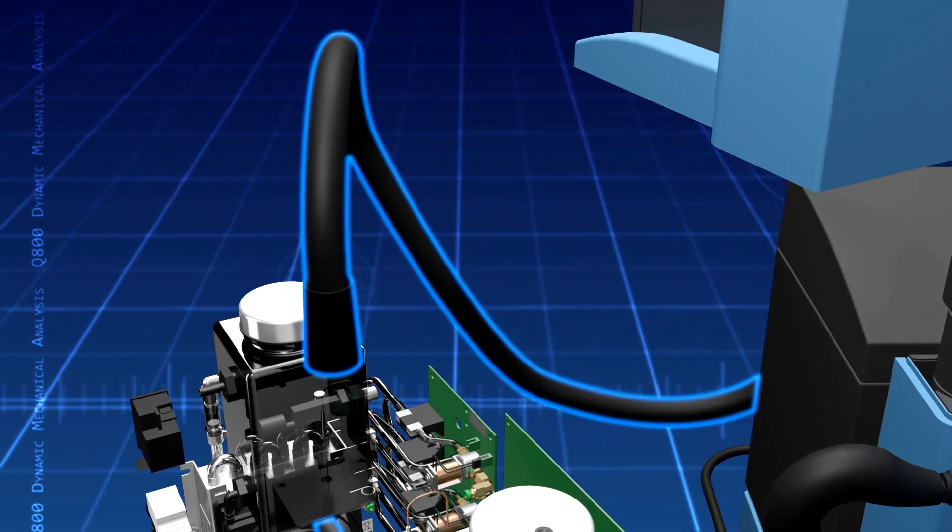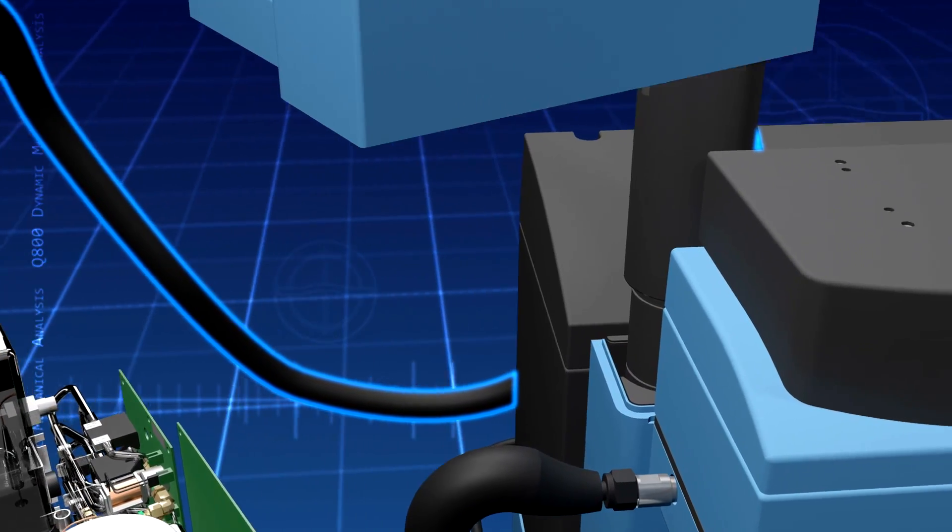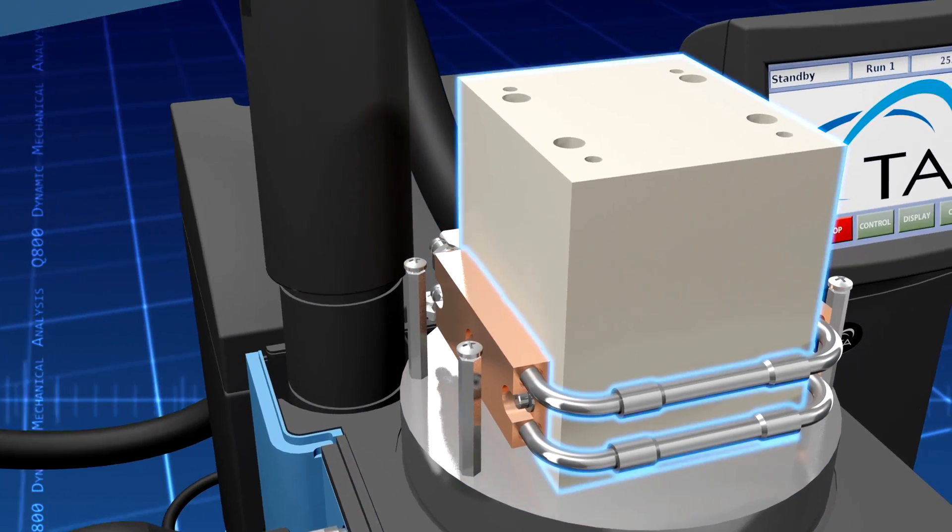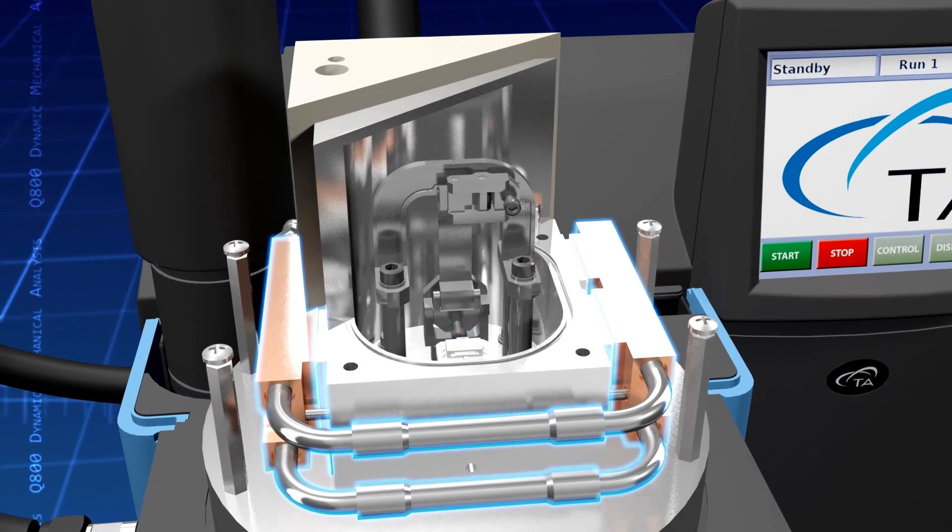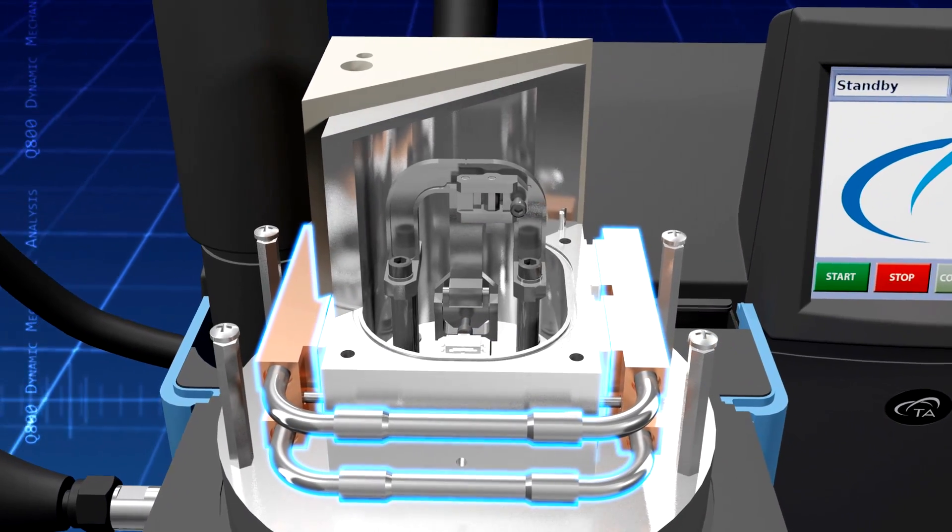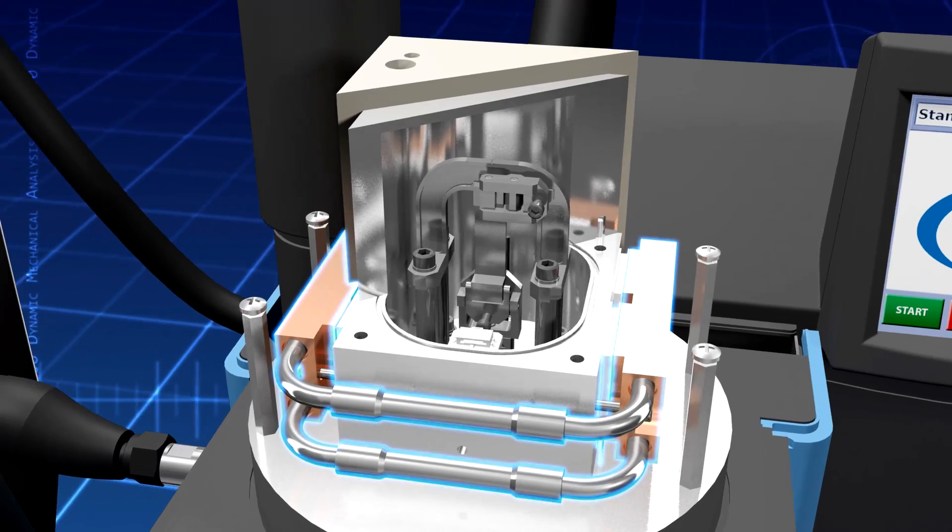A thermostatically controlled transfer line delivers the humidified gas to the high-performance environmental chamber. The DMA-RH accessory includes Peltier elements, which precisely control the chamber temperature.